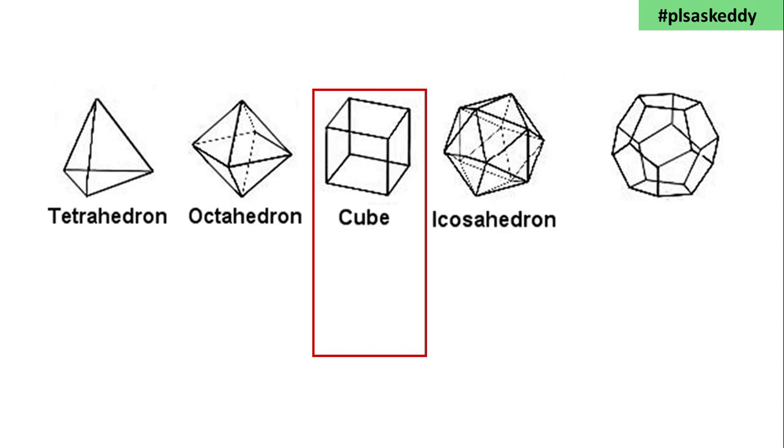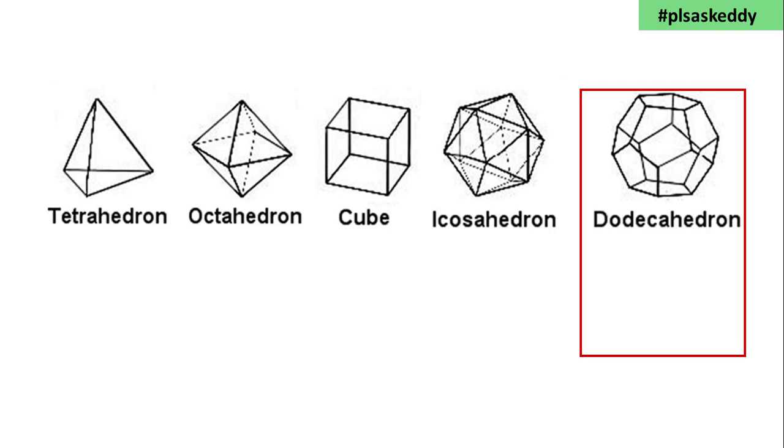Only one solid can be built from the square, and that's the cube, or hexahedron. And only one solid can be built from the pentagon, and that's the dodecahedron, with 12 faces. There are no more. You may like to consider why you cannot build a 3D shape from hexagons.